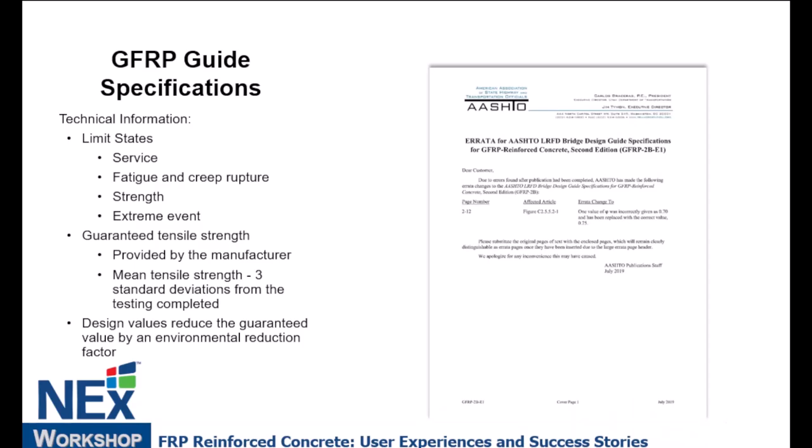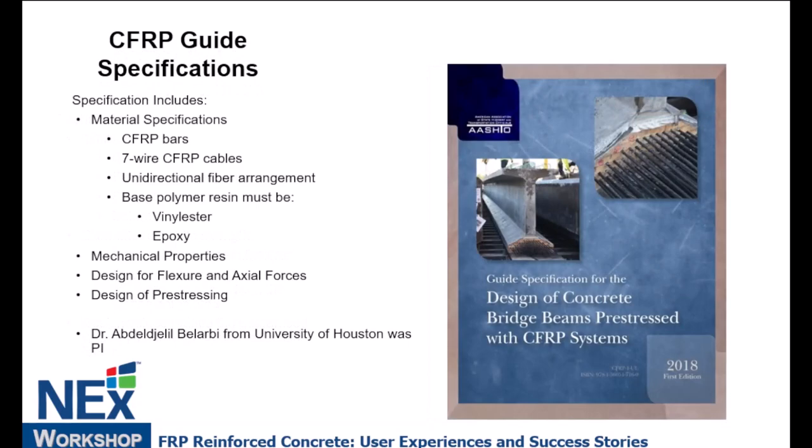The cool thing about putting out a guide specification is that as soon as somebody uses it, they find you missed something — which is a good sign because it means somebody's using it. Within a year, we had a resistance factor being questioned by practitioners. The T6 committee took it back, looked at it, and bumped something from 0.65 to 0.7. That's why you always have to have a good mix of folks — you need the academic side to write the specifications, but there has to be an end user who finds them useful.